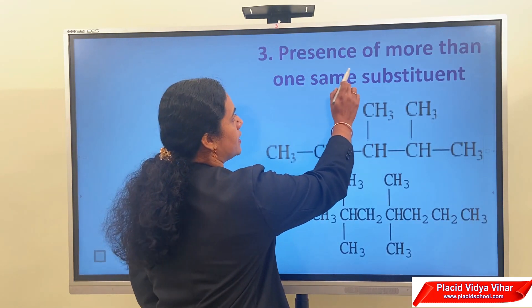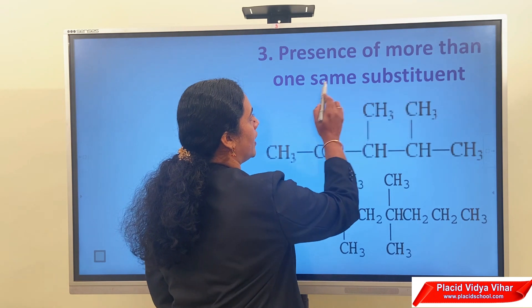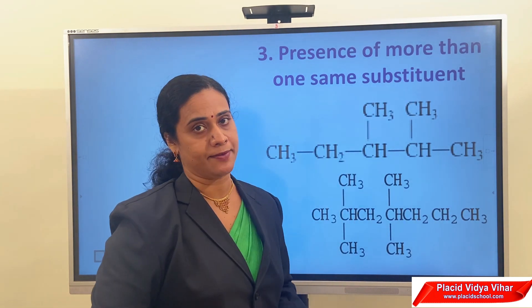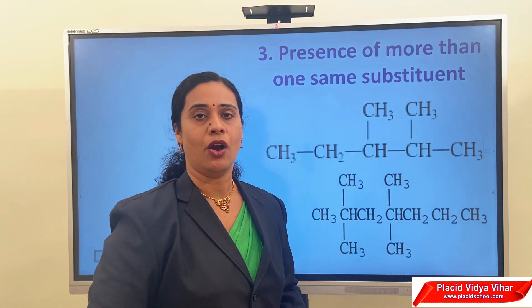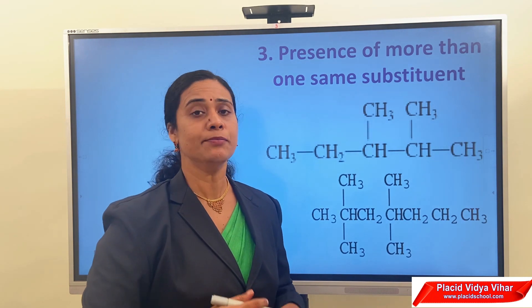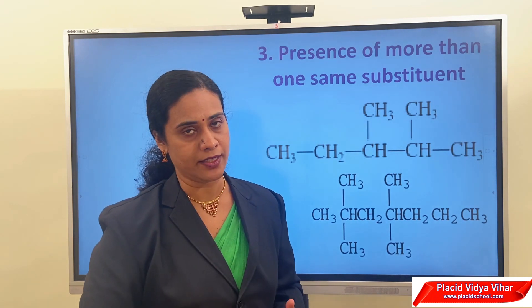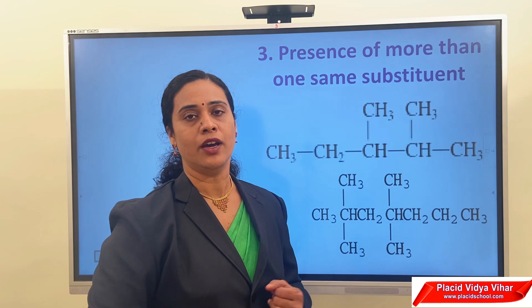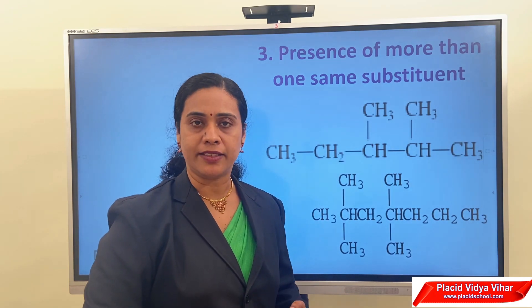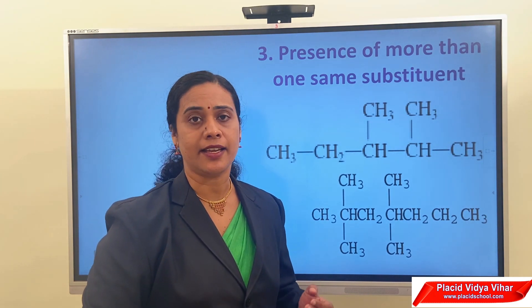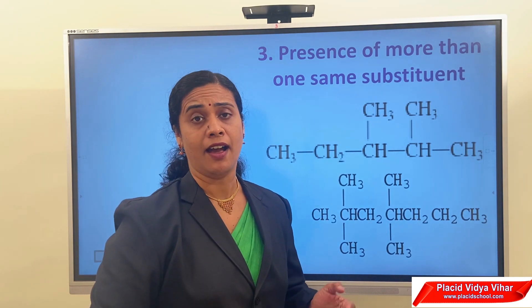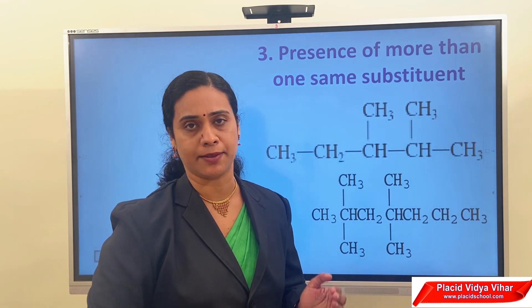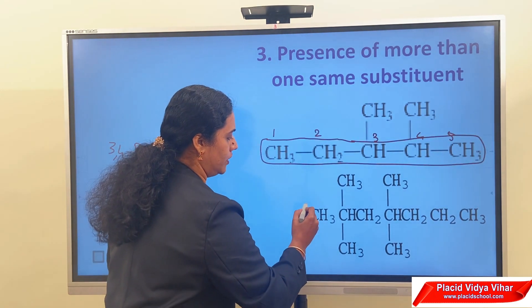Rule number 3: presence of more than one same substituent. If the same substituent or side chain occurs more than once, the prefixes di, tri, tetra, penta, hexa etc. are attached to the names of the substituents.